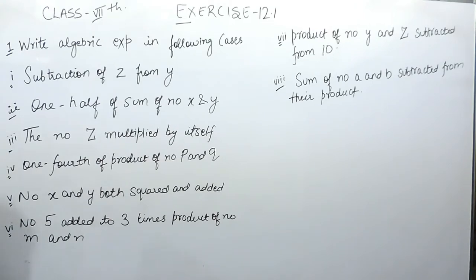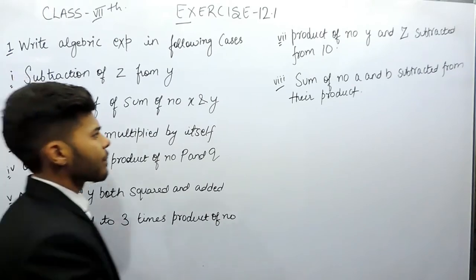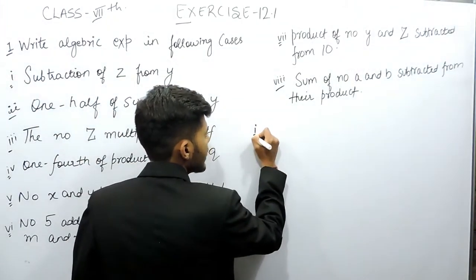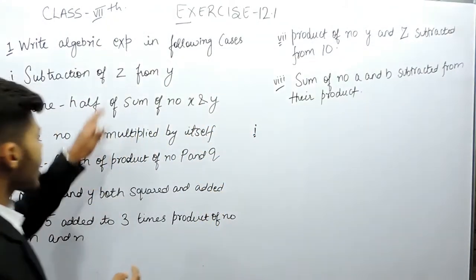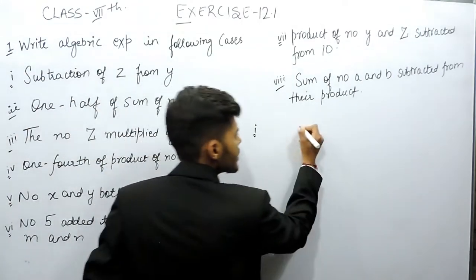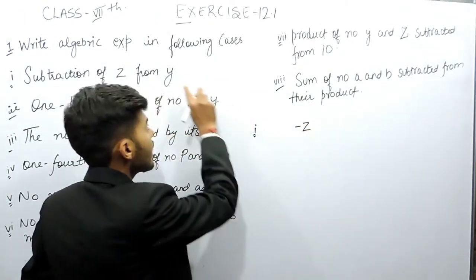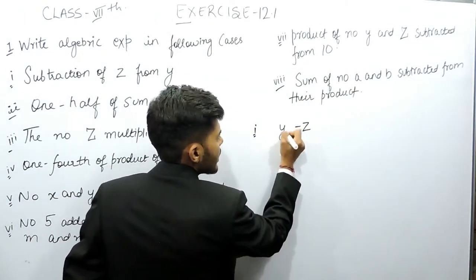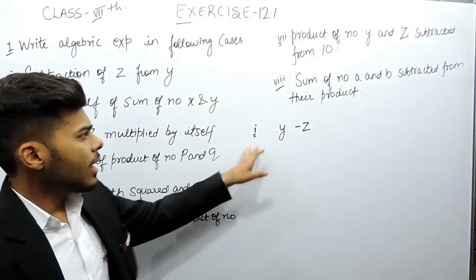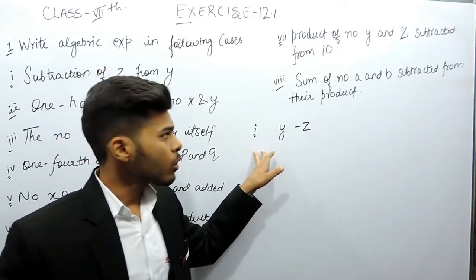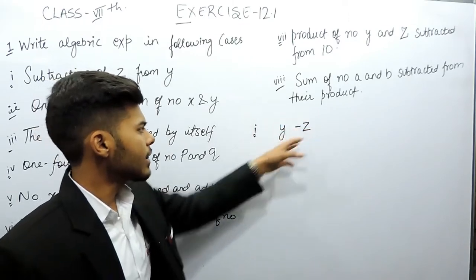Let's see the first part. It says subtraction of z from y. What does this mean? This means subtraction of z, that means it will be minus z from y, so it will be y minus z. It is similar like if you say you got 80 out of 100.